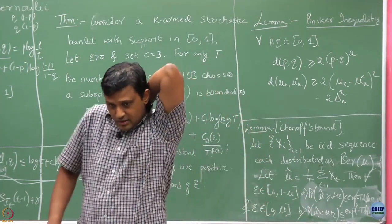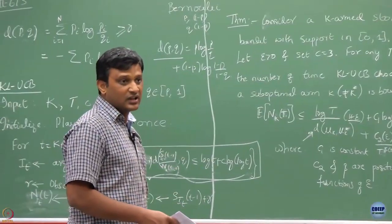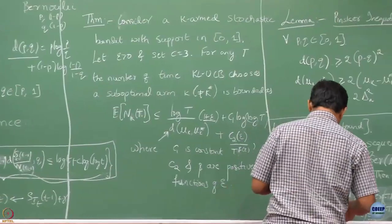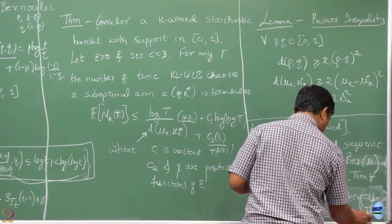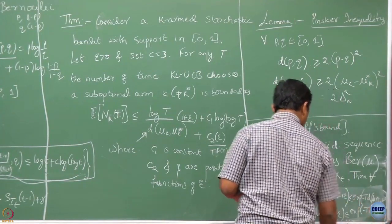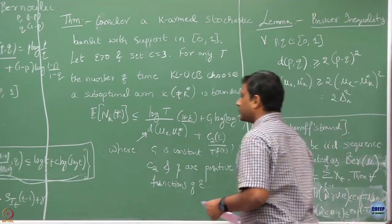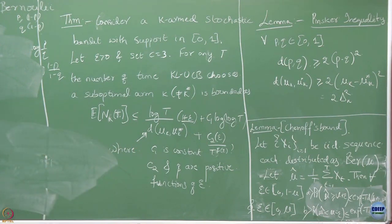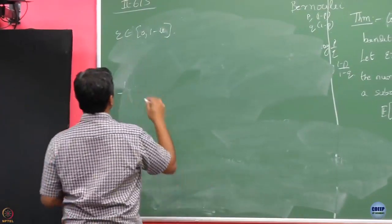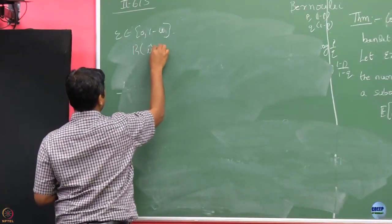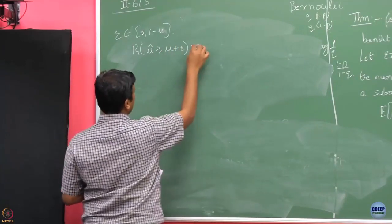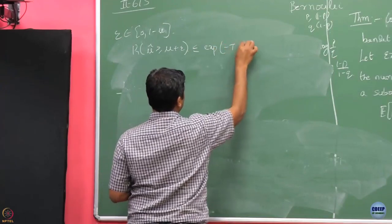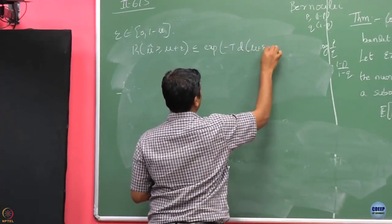Actually it should be mu minus epsilon here, not mu plus epsilon for the lower tail. Let me write it again clearly. For epsilon between 0 and 1 minus mu, we are saying that the probability that mu-hat is greater than or equal to mu plus epsilon is upper bounded by exp of minus T times the divergence between mu plus epsilon and mu.